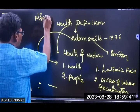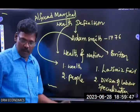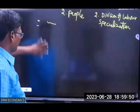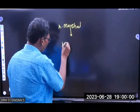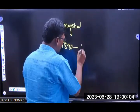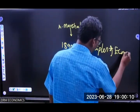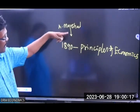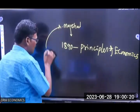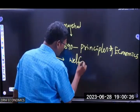Alfred Marshall criticized the wealth definition and wrote the book 'Principles of Economics' in 1890. He was the person who gave an alternative definition to the wealth definition, which is known as the welfare definition.